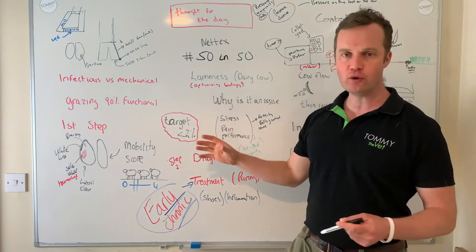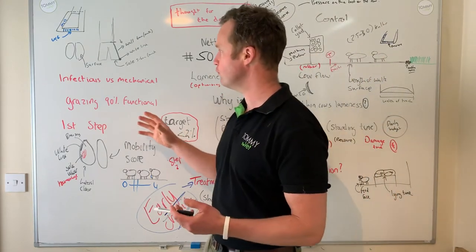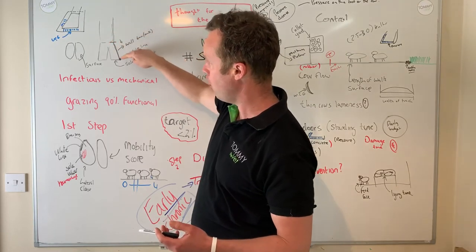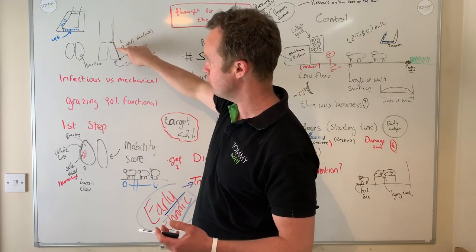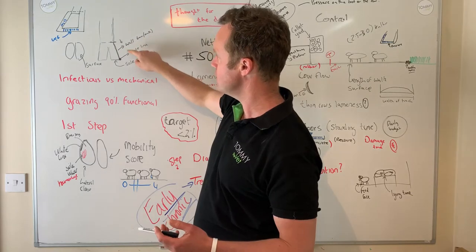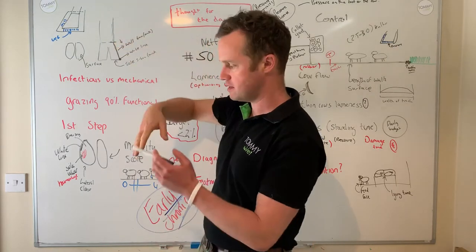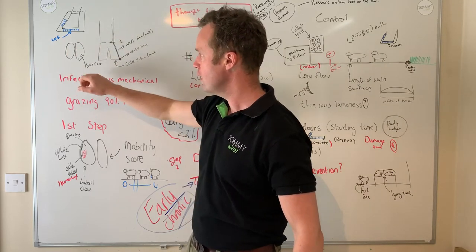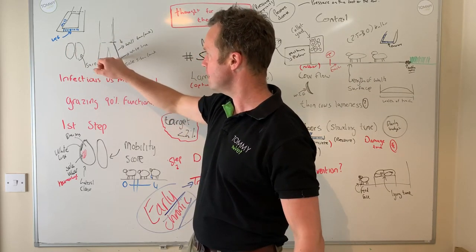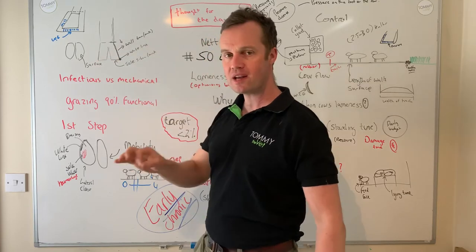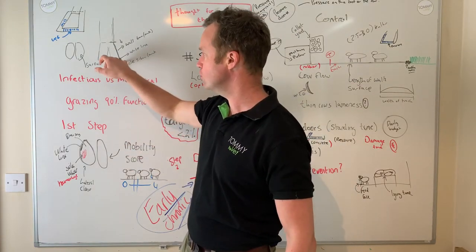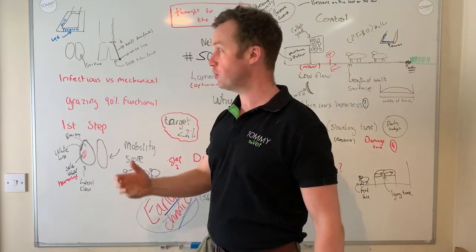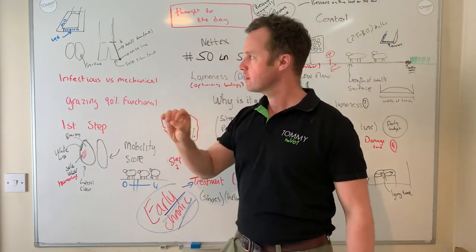Everybody knows the shape of a cow's foot but just to reinforce it: your foot here, the corny band, the wall, the outside wall. The foot will grow down from here at six millimeters a month so it takes a long time. That's the outer shell of the hoof and then where we see a lot of the issues are on the surface of the hoof. That sole is quite thin and it grows quite slowly.